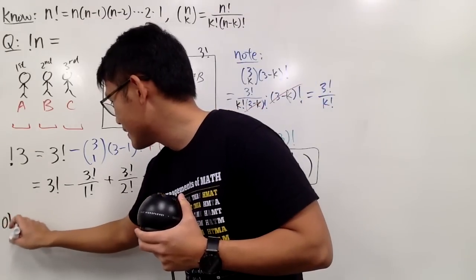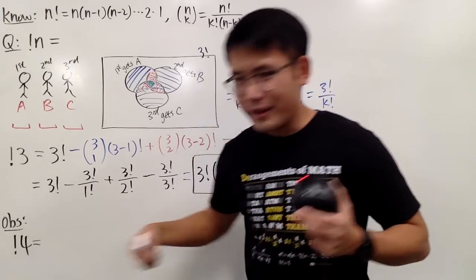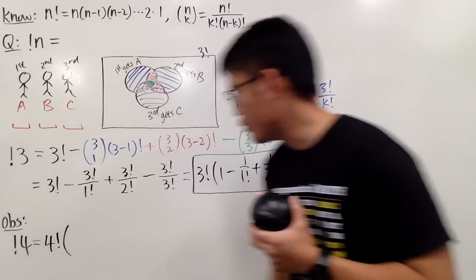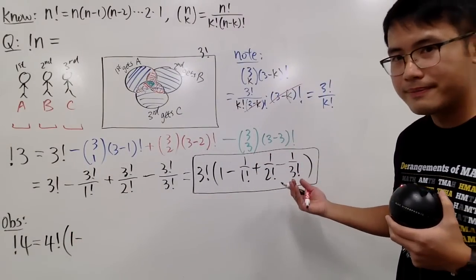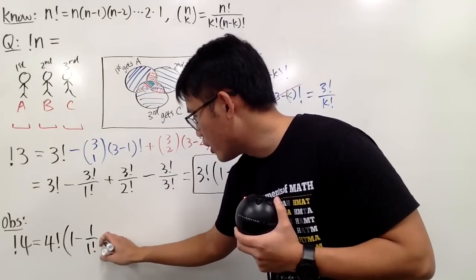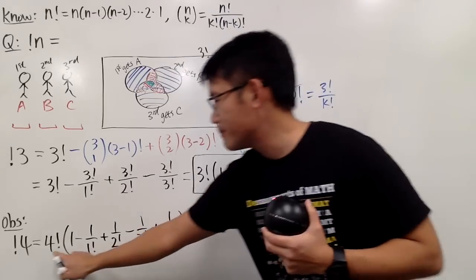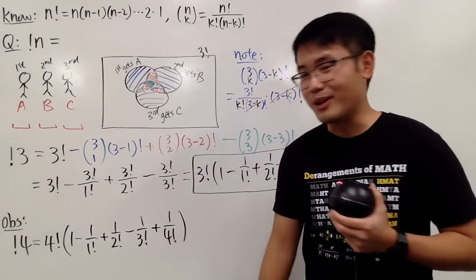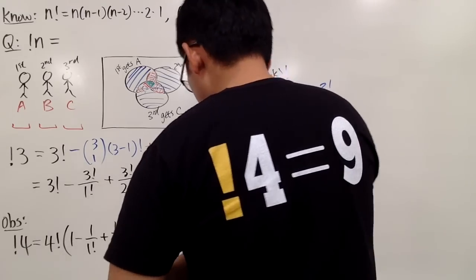Now I want to generalize this for any n, but first let's make another observation. Suppose you have another friend show up, so now you have to do the computation over again — subfactorial of four. All you have to do is: when you have four, you have four factorial, and then open parentheses starting with one, then minus one over one factorial, plus one over two factorial, and so on. You stop when this number matches that, making sure the sign alternates. So: one minus one over one factorial, plus one over two factorial, minus one over three factorial, plus one over four factorial. It's really hard to draw a Venn diagram with four circles, so just follow this pattern.